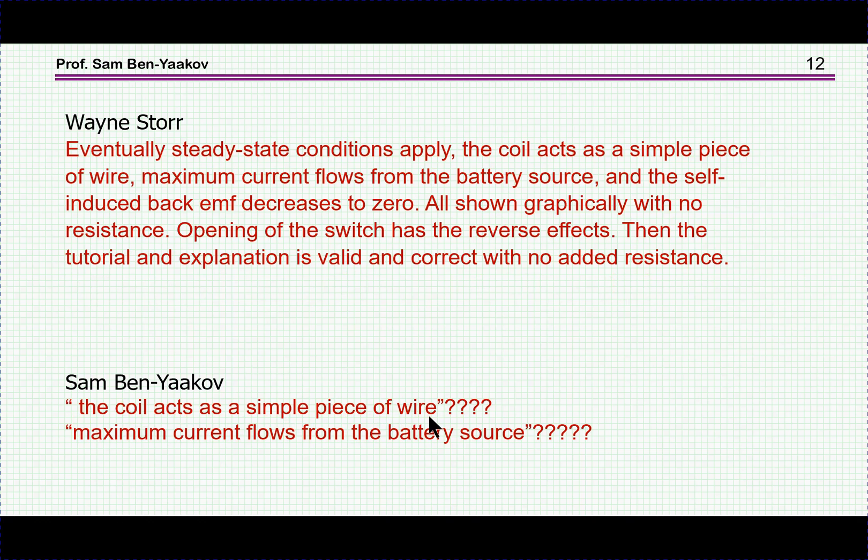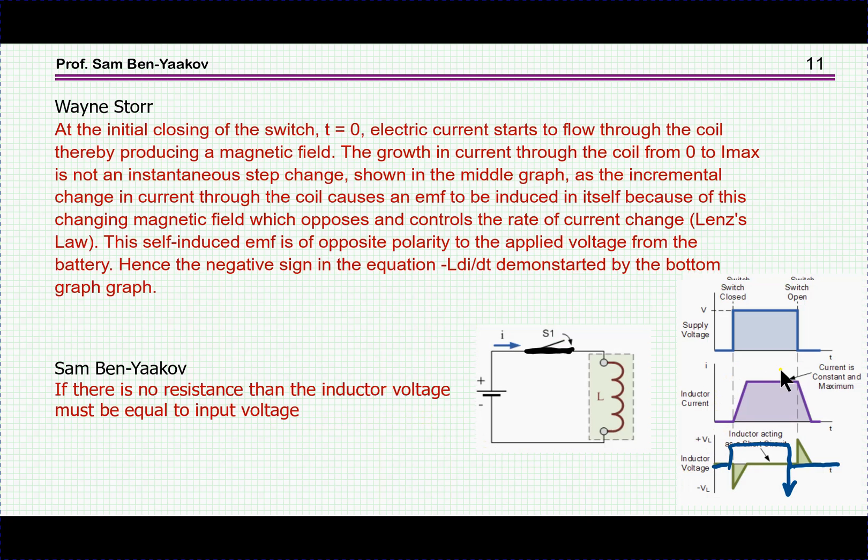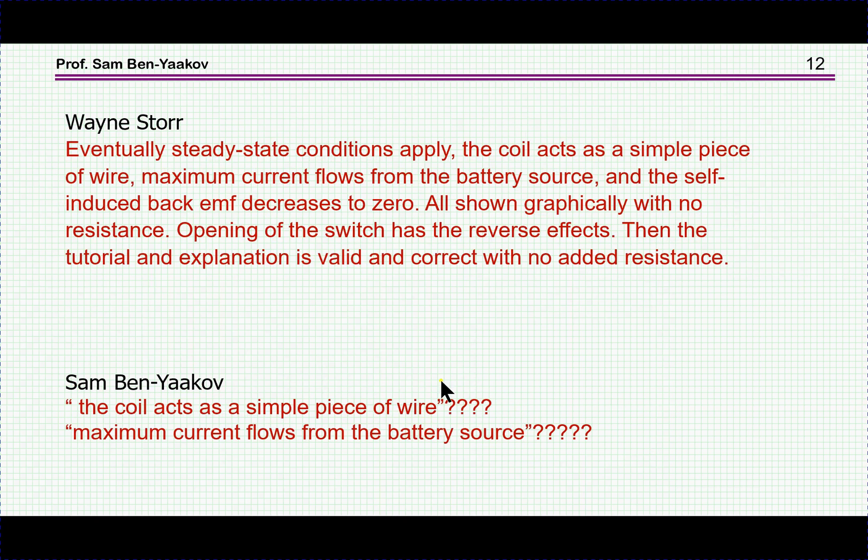But I don't understand: the coil acts as a simple piece of wire—does it have a resistance, does it not have a resistance? It's impossible to have a waveform like this if there is no resistance. And if there is a resistance, it's going to be exponential increase of the current.